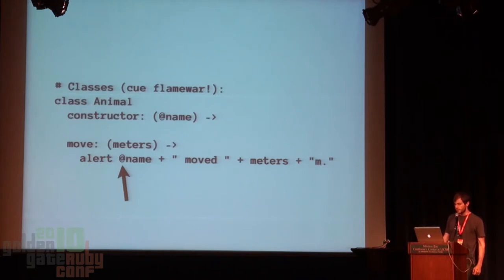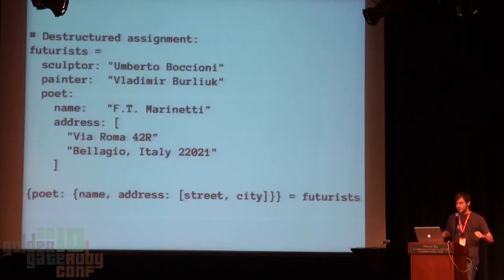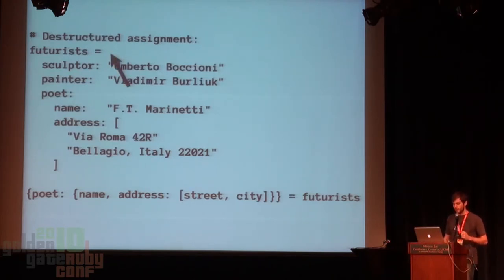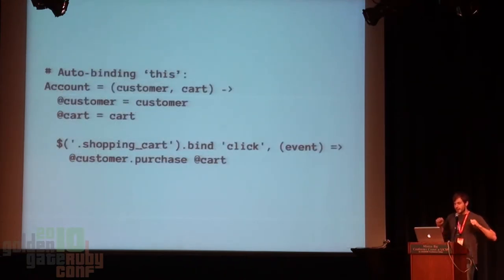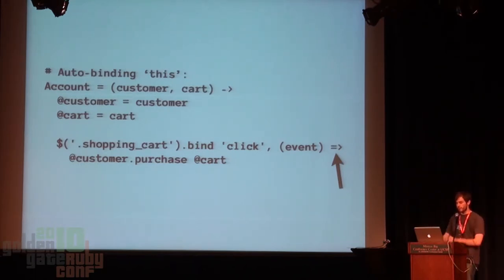It's got built-in simulation of class-based inheritance in JavaScript. Notice there's an @name — this is like an instance variable that compiles into 'this.name'. Constructor functions automatically apply all of their arguments that have @ in front of them to the appropriate instance variables with 'this'. Destructured assignment: you can assign the return value from any expression to a complex data structure, just like in Ruby. Object literal curly braces are optional. And if you hate writing '.bind(this)' at the end of all your inline function declarations, if you use a fat arrow (=>) instead of a dash arrow, it does it for you.